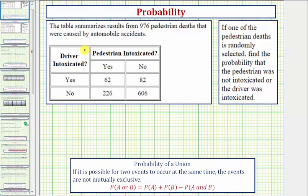We just solved this problem, but I thought we should look at it again using a different approach. The table summarizes results from 976 pedestrian deaths that were caused by automobile accidents. Notice how the table indicates whether the pedestrian was or was not intoxicated, as well as whether the driver was or was not intoxicated.